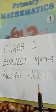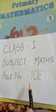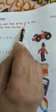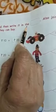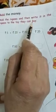Good morning students. Take out your math book, page 108. Add the money — add the rupees and then write it in the box. Also join the rupees to the toy they can buy.